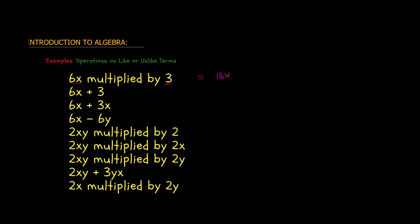6x plus 3 — again the same two unlike terms. But now the operation is addition, and for addition we cannot add two unlike terms. This means we keep these two terms in the same form. We are not removing them; we will keep those two terms as they are. So the answer would be 6x plus 3 — keep them the same because they are unlike.